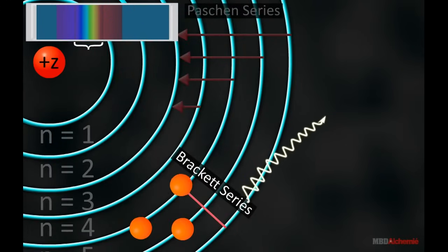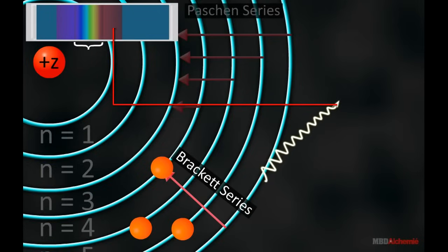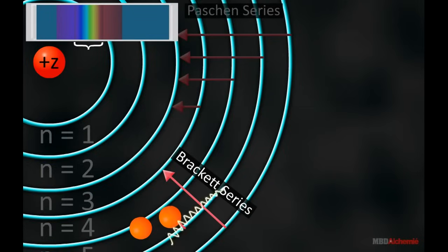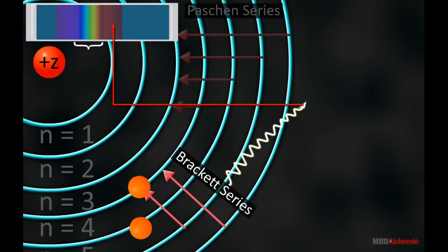When a transition from higher orbits to the fourth orbit occurs in the atom, the Brackett series is obtained.